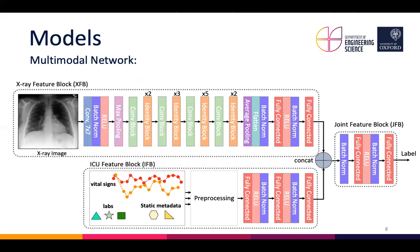We implemented three models to investigate the predictive skill of each modality. The first is our multimodal network, which uses the combination of x-ray images and non-imaging ICU data — including vital signs, lab data, and patient metadata — to classify cardiomegaly. High-level features are extracted from x-ray images via an x-ray feature block using a ResNet-50 architecture, and simultaneously a small neural network in the ICU feature block, consisting of three fully connected layers, extracts features from the non-imaging data. We concatenate the outputs of these two blocks, taking 32 nodes from the x-ray feature block and 16 from the ICU feature block, before adding two more fully connected layers. Training uses a two-step approach: first pre-training the x-ray and ICU feature blocks separately, then concatenating them and training the whole network jointly.